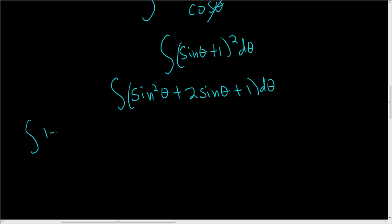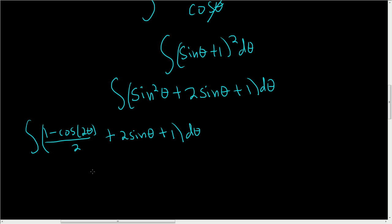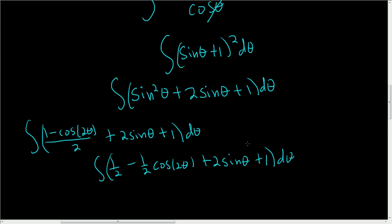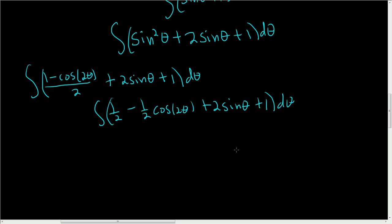For sine squared, there's an identity: sine squared theta equals (1 minus cosine 2 theta) over 2. Substituting that in, we get the integral of (1 minus cosine 2 theta) over 2 plus 2 sine theta plus 1, d theta. This gives us one half minus one half cosine 2 theta plus 2 sine theta plus 1. Combining constants: 1 half plus 1 is 3 halves, so we have 3 halves minus one half cosine 2 theta plus 2 sine theta, d theta.